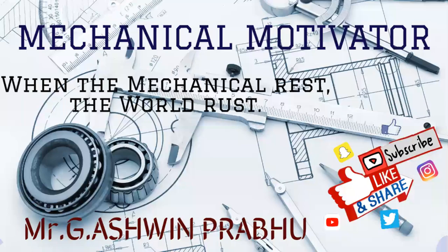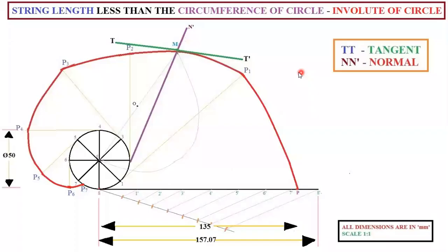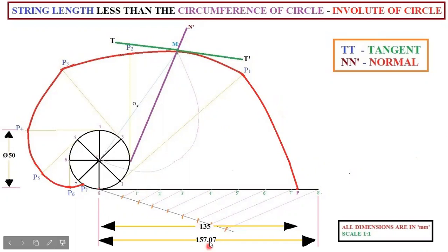Hello friends, welcome to our channel Mechanical Motivator. In this video we are going to see how to draw an involute of a circle. The condition is string length: the string length is 135 mm, which is less than the circumference of the circle, which is 157.07 mm.